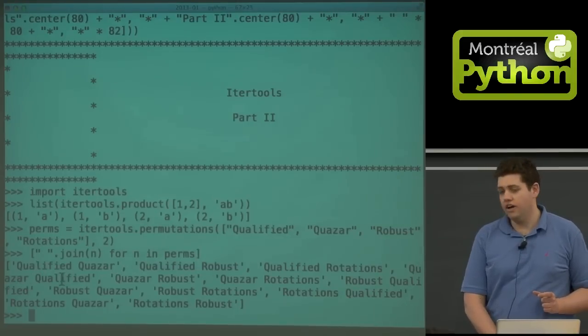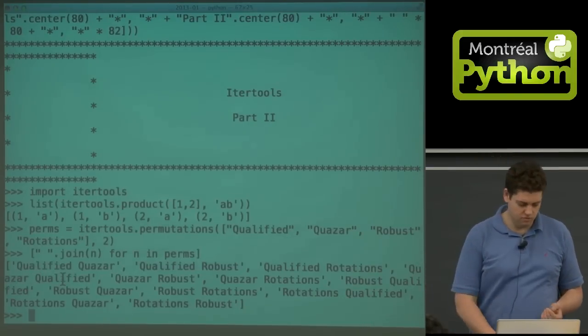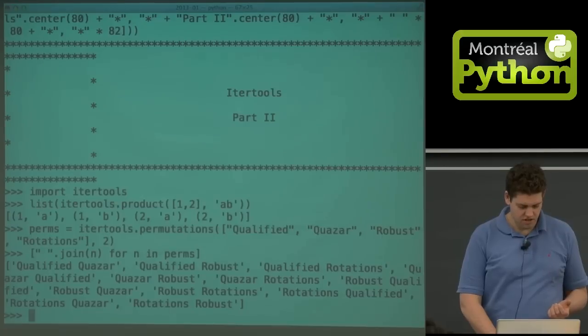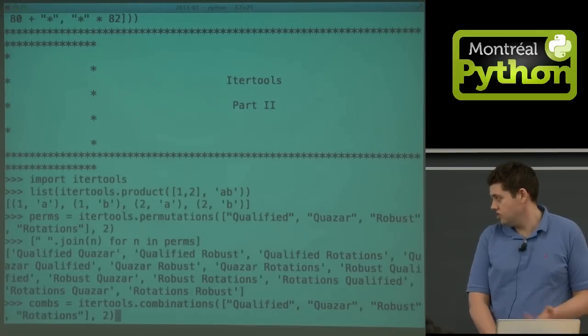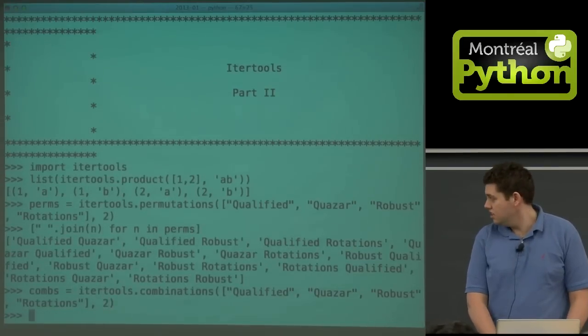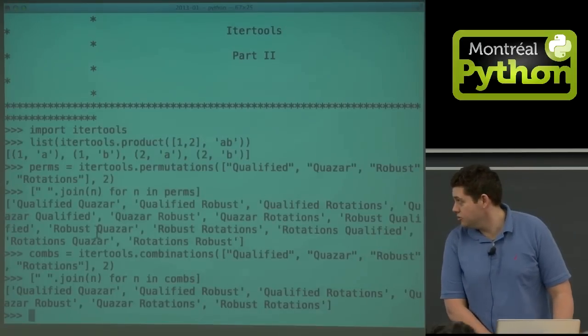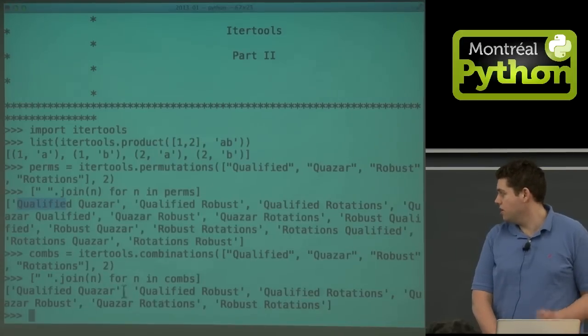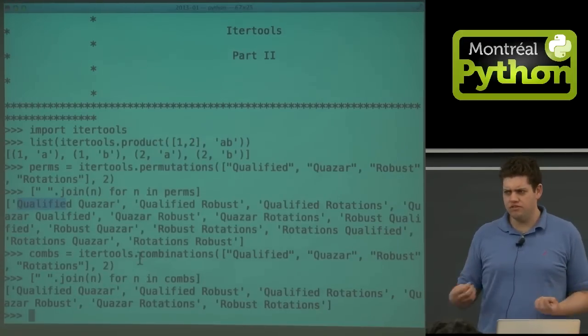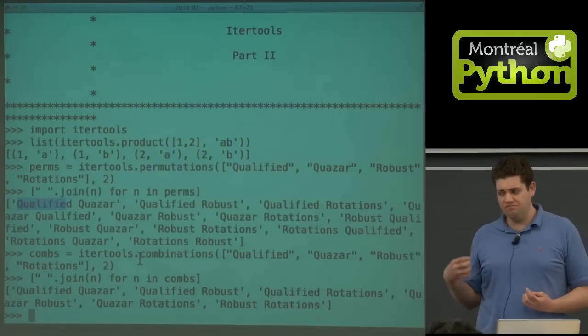It's not combinations, which is no surprise—that's the next function. If you don't want those doubles coming up again, same as permutations, this will do the same thing except remove all the doubles. So instead of qualified quasar and quasar qualified, you just get qualified quasar in this case, but that with all the others.